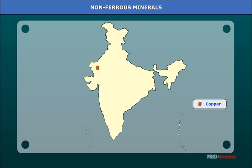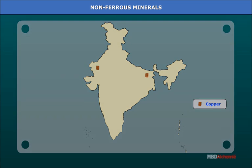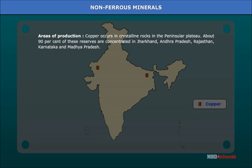Non-ferrous minerals. India is deficient in copper and has to depend on foreign supplies. The total reserves are estimated at 7,125 lakh tons. On an average, the annual production of copper concentrate is nearly 1.5 lakh tons. The Balaghat mines in Madhya Pradesh produce 52% of India's copper. About 90% of these reserves are concentrated in Jharkhand, Andhra Pradesh, Rajasthan, Karnataka, and Madhya Pradesh. The main producing area is Balaghat in Madhya Pradesh and Singhbhum district, Jharkhand.